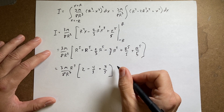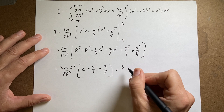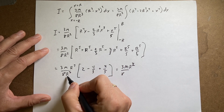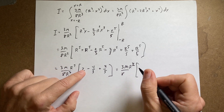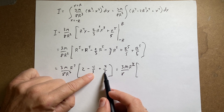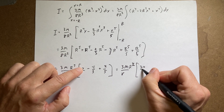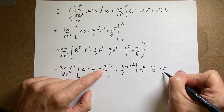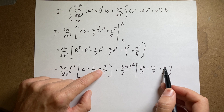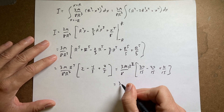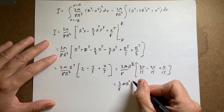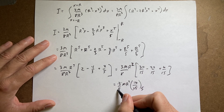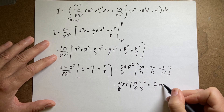Getting a common denominator of 15: 2 = 30/15, 4/3 = 20/15, 2/5 = 6/15. So 30/15 − 20/15 + 6/15 = 16/15. That gives I = (3m/8r³) × r⁵ × (16/15) = (3m/8) × r² × (16/15). Simplifying: 3 × 16 = 48, and 8 × 15 = 120, so 48/120 = 2/5. Therefore I = (2/5)mr².